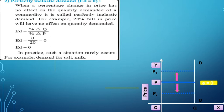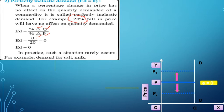Symbolically, using the formula: when percentage change in quantity demanded is zero and percentage change in price is 20%, the elasticity of demand equals zero. In practice, such a situation rarely occurs.